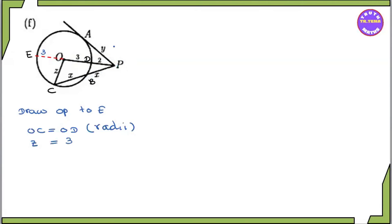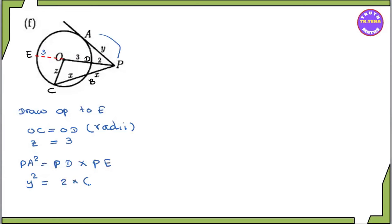This is a tangent to a, b squared. This is a tangent to a second. This is a PE. This is a PE square. PE square equal to PD into. Multiply PD into PE. This is a tangent to a. PE square equal to PD into a. This is a tangent to a, two plus three plus three. Do into a. So we change.